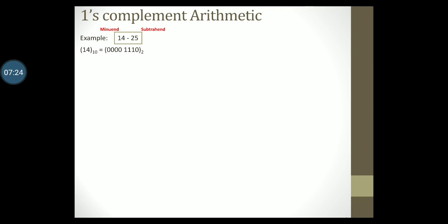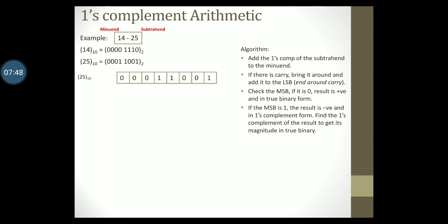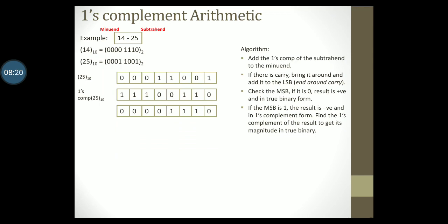14 in 8-bit binary is 00001110. Also, 25 converted to binary gives 00011001, also represented as 8 bits. Bringing up the algorithm: the first step tells us to add the 1's complement of the subtrahend to the minuend. The subtrahend here is 25 with binary representation 00011001. Finding its 1's complement by inverting the bits, we get 11100110. The minuend is 14, represented as 00001110 in binary.